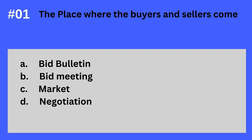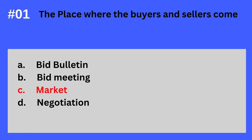Question 1. The place where the buyers and sellers come. A. Bid Bulletin. B. Bid Meeting. C. Market. D. Negotiation. The answer? It's C. Market. The place where the buyers and sellers come — Market.